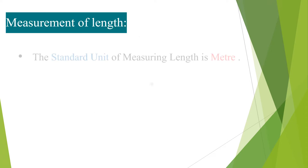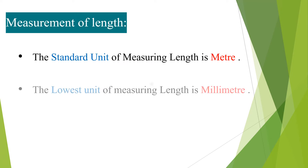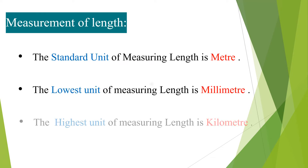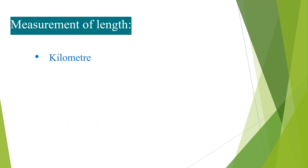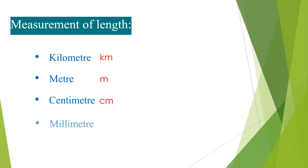The standard unit of measuring length is meter. The lowest unit of measuring length is millimeter. The highest unit of measuring length is kilometer. Kilometer is denoted by km. Meter is denoted by small m. Centimeter is denoted by cm. Millimeter is denoted by mm.